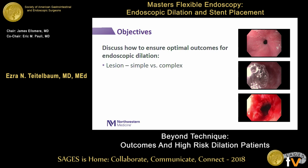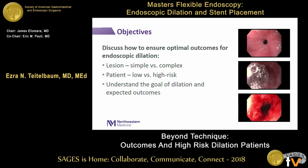It really boils down to three factors. The first is the lesion — what are you dilating? Classify it as simple or complex. The second is the patient — is this a low-risk or high-risk patient? And the third is: what is the goal of dilation? Thinking systematically about what you're trying to achieve will guide what you do with the procedure and afterwards, and lets you come up with a plan for before, during, and after the dilation.